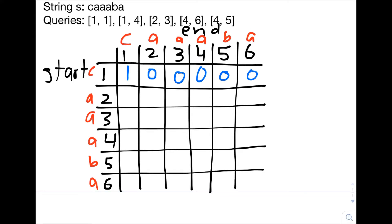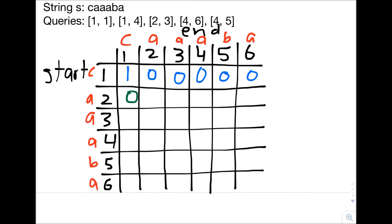The range from 2 to 1 doesn't exist, because that range goes backwards. You cannot start at 2 and end at 1 if you're only going forward. So by default, 2,1 is 0. 2,2 is the letter A, which is a palindrome. 2,3 is the letters AA, which is also a palindrome.